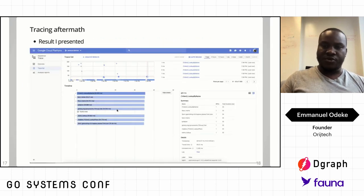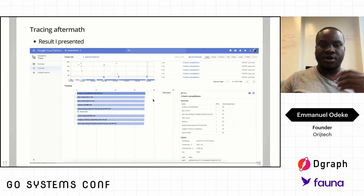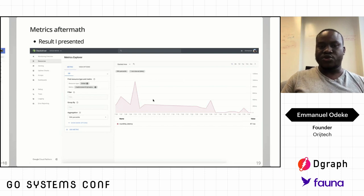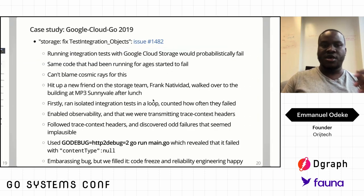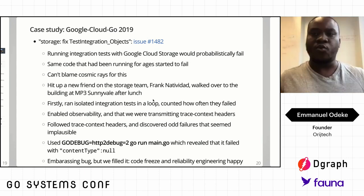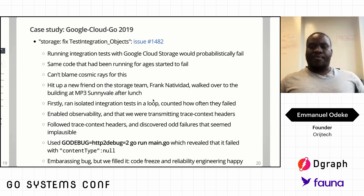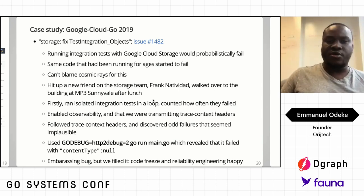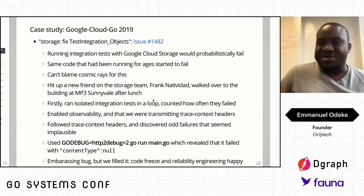And this was the aftermath — traces and metrics are present. Another case study: we suddenly got a very odd issue where an integration test was failing. No one could really figure out why. This was code that had been running perfectly, but all of a sudden it would crash. The team pinged me. They said we need help with this, something's going wrong — and you can't blame cosmic rays for this.